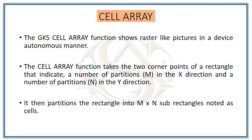Cell array is a function for raster-like pictures in a device-independent manner. It takes two corner points of a rectangle in the x and y direction, and with those two points a rectangle is formed. The rectangle is then partitioned into m by n sub-rectangles called cells, which are pixels. Going deeper into the drawing, we can see rectangular shapes — the cell array — through which rasterization frames the display of the drafted object, whether primitives or text.